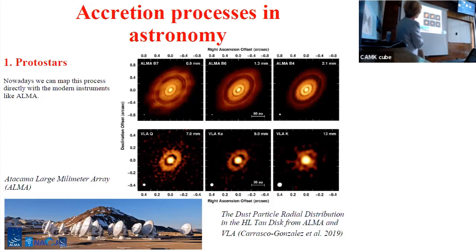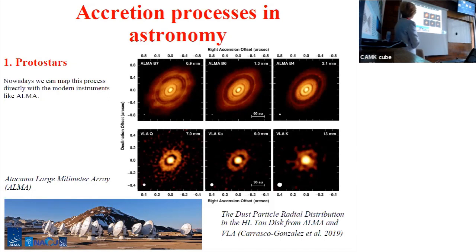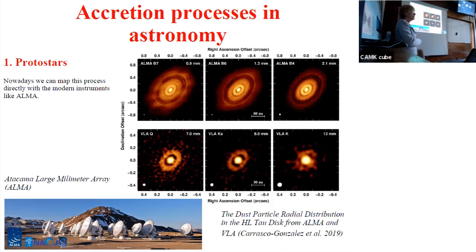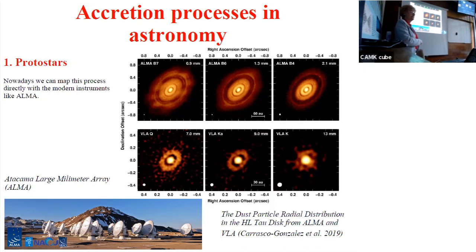Here you see real images of newly born stars surrounded by accretion disks — partially outflowing, partially inflowing — where planets can form. This image is possible to obtain using the Atacama Large Millimeter Array, shortly ALMA, which is located in Chile at a height of about 5000 meters. The air is dry there and you can do observations even at a fraction of a millimeter to resolve the image. In Poland, we cannot observe at millimeter wavelength because of too much water vapor.